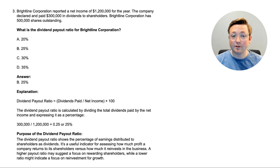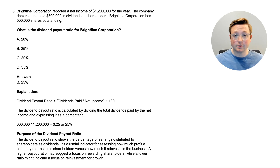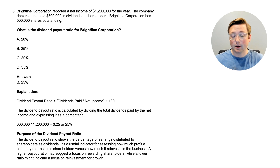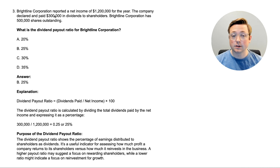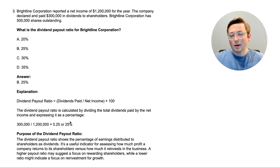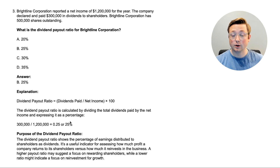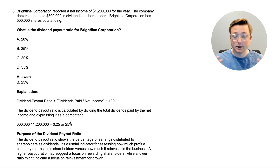The answer is B, 25%. The dividend payout ratio is a very easy calculation: dividends paid divided by net income, multiplied by 100 to get the percentage. Here: $300,000 ÷ $1,200,000 = 0.25, or 25%. You're often given exactly what you need. Even if you see a big income statement, you just need net income and the dividends paid — that's all that goes into this ratio.